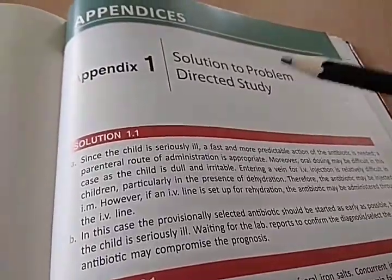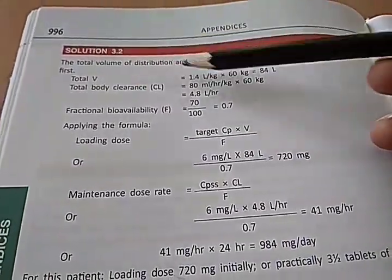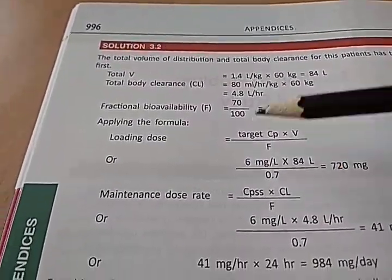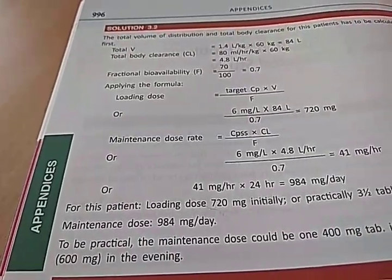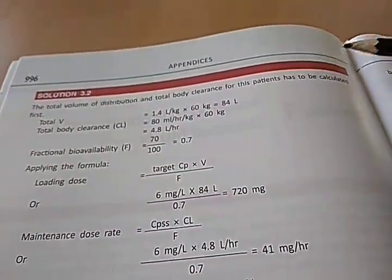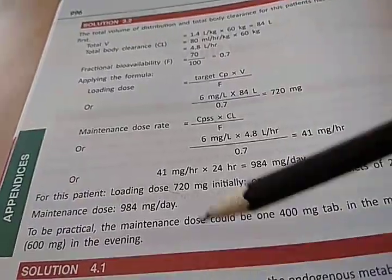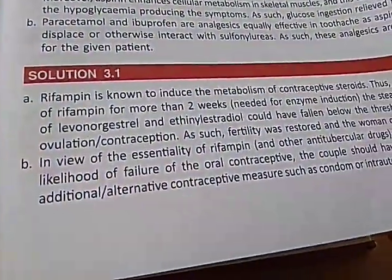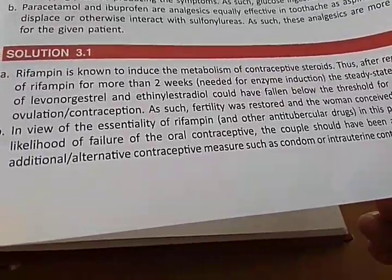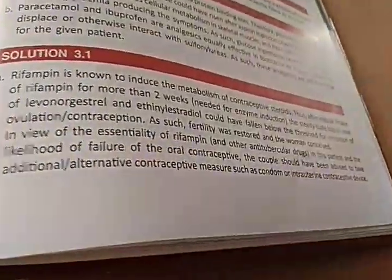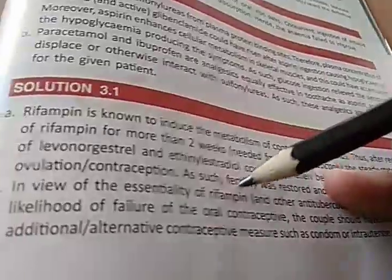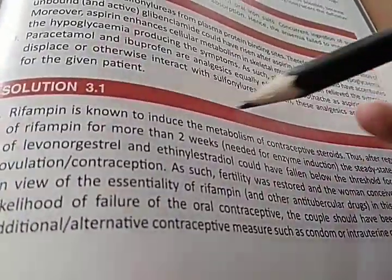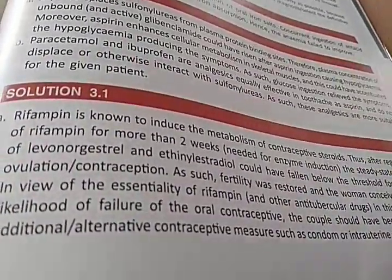They have a problem-directed study section where you can calculate the dose: total volume, distribution, clearance, loading dose, maintenance dose. For example, rifampicin is known to induce the metabolism of contraceptive steroids. So basically if someone is on an oral contraceptive pill and also taking rifampicin, the metabolism of the contraceptives can get affected — meaning these people can get pregnant, so you should be very careful.